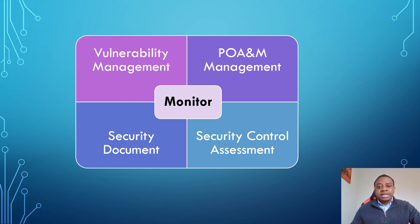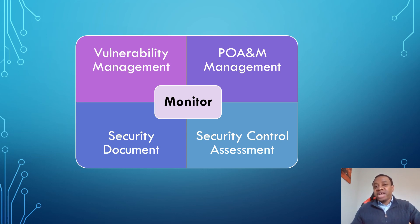The next activity is plan of action and milestones management. The plan of action and milestones is a CA-5 control. It is used to document any identified vulnerabilities and is used to track vulnerabilities to remediation.